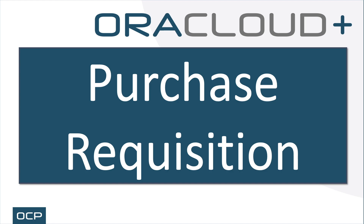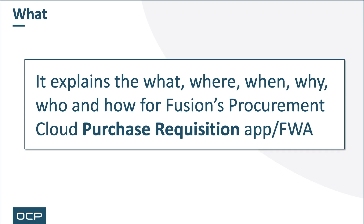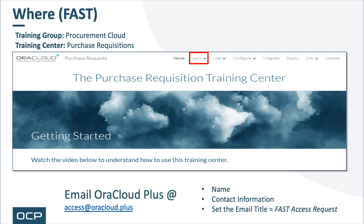Hello and welcome to the Purchase Requisition Overview video presentation. This video is intended for beginners looking to learn more about Fusion's Purchase Requisition capabilities. It explains the what, where, when, why, who, and how for Fusion's Procurement Cloud Purchase Requisition Application — also called a Functional Work Area. This video snippet, as with all Oracle Cloud Plus video snippets, can be found within FAST, our Fusion Application Support Tool.